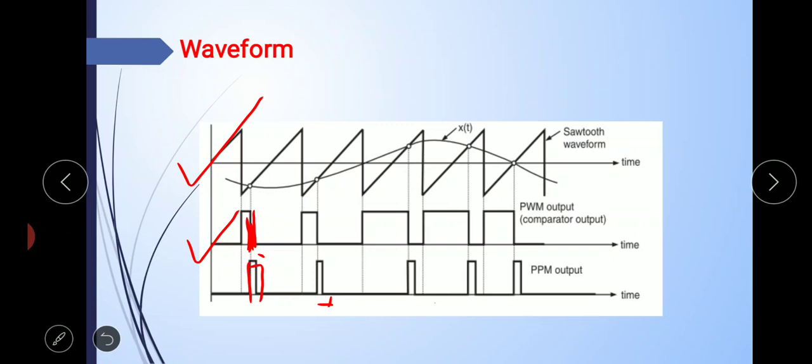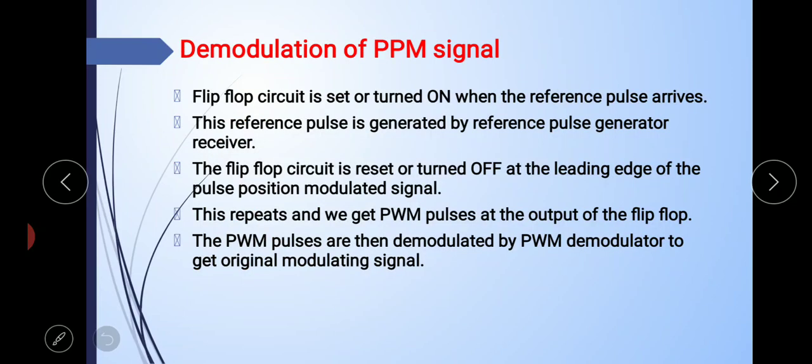Since the PWM signal is used as the trigger input, and the width of the PWM signal varies, the position of the PPM pulses also shifts automatically. Therefore, the position of the pulses is varied. Since the amplitude of all PPM and PWM pulses are the same, non-linear amplitude distortion as well as noise interference does not affect the detection at the receiver. This is all about the generation of the PPM signal.